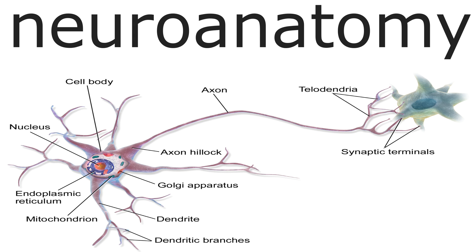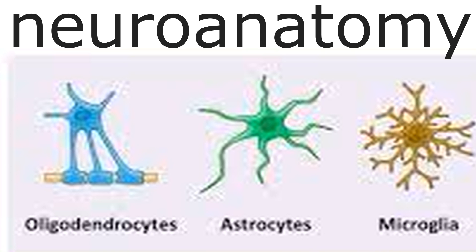Every system — digestive system, circulatory system — every system has some functional cells and some supporting cells. So neuroglia are the supporting cells of the nervous system. The main function of the nervous system is carried by neurons, and neuroglia just provide physiological and metabolic support for neurons. They are a diverse class of cells that carry out phagocytosis and produce myelin sheath.